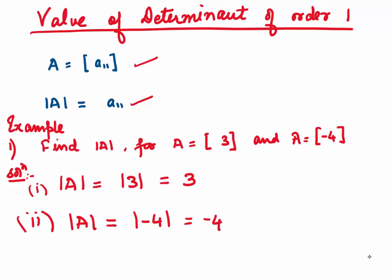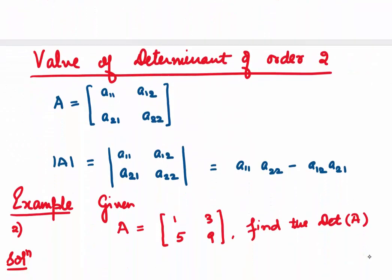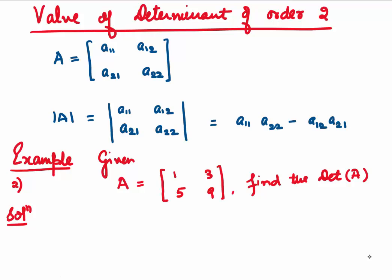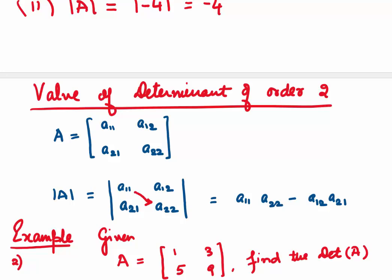For a determinant of order 2, given a matrix A with elements A11, A12, A21, A22, the value of the determinant is found by cross-multiplying starting from the left side: A11 into A22 minus the product A12 into A21. So the value of a determinant of order 2 is the difference of the cross-products starting from the left side.